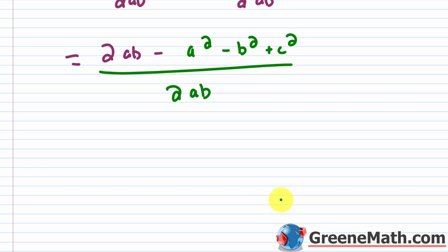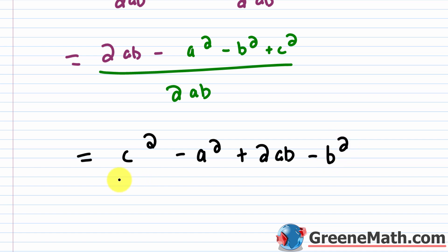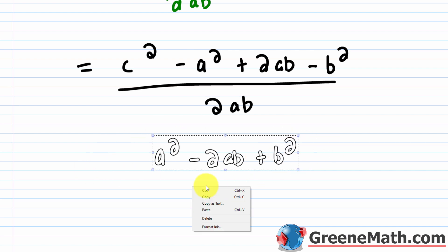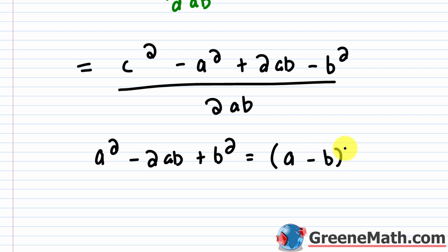This part is where many people struggle. Reordering the numerator, we have C squared minus A squared plus 2AB minus B squared over 2AB. Notice the pattern A squared minus 2AB plus B squared equals the quantity A minus B squared. What we have has all opposite signs: minus A squared plus 2AB minus B squared. Since all signs are opposite, we can factor out a negative one to recover that pattern.